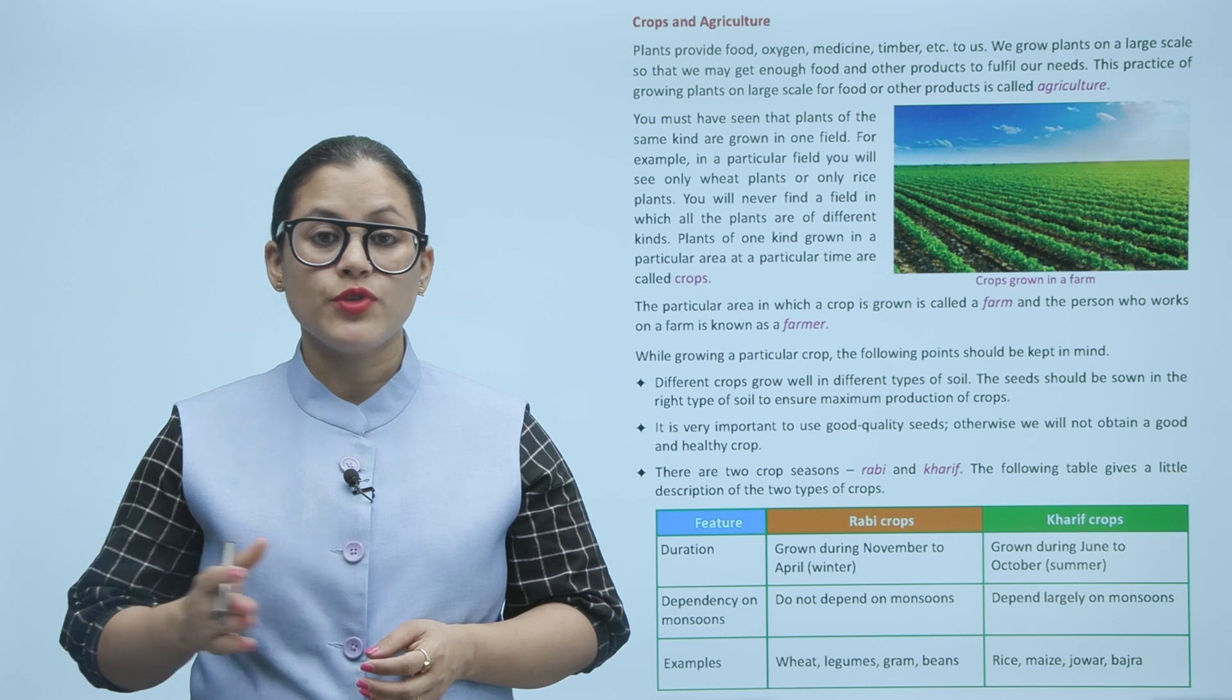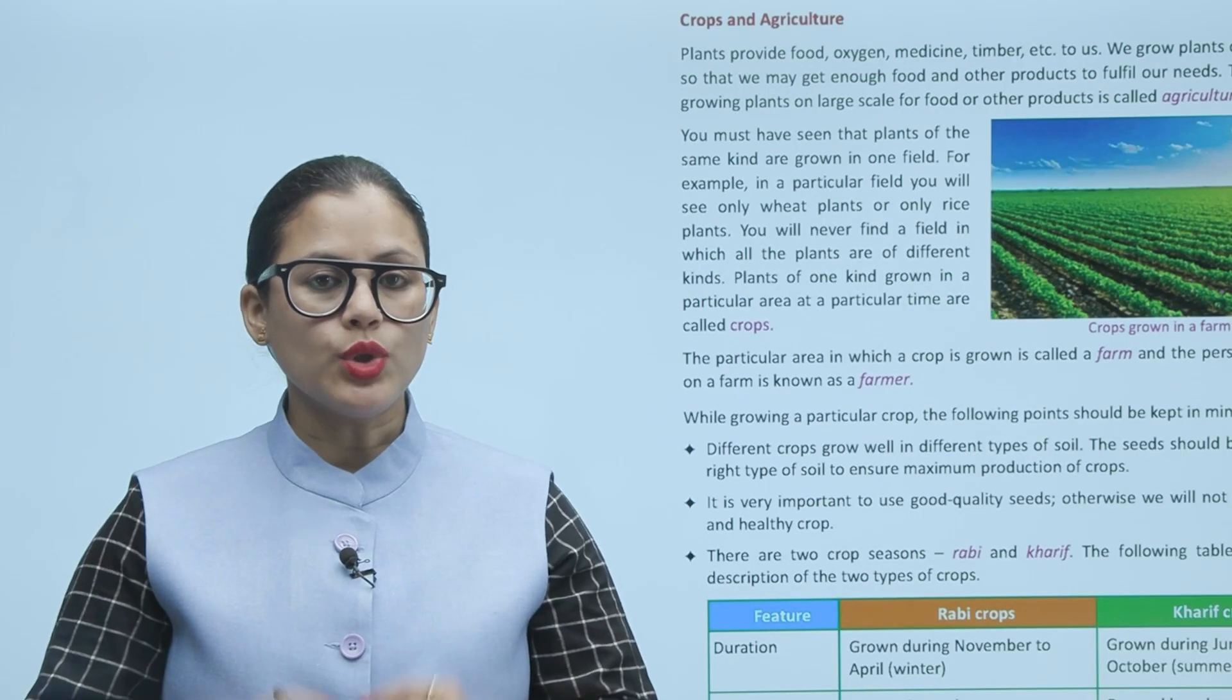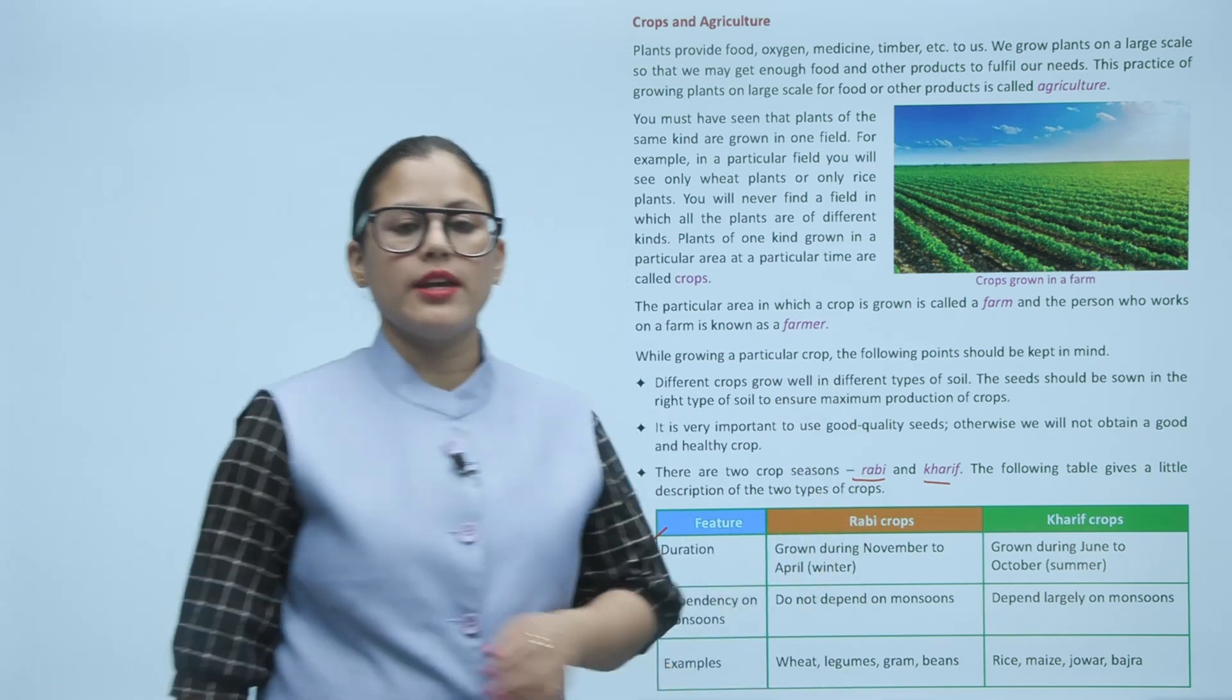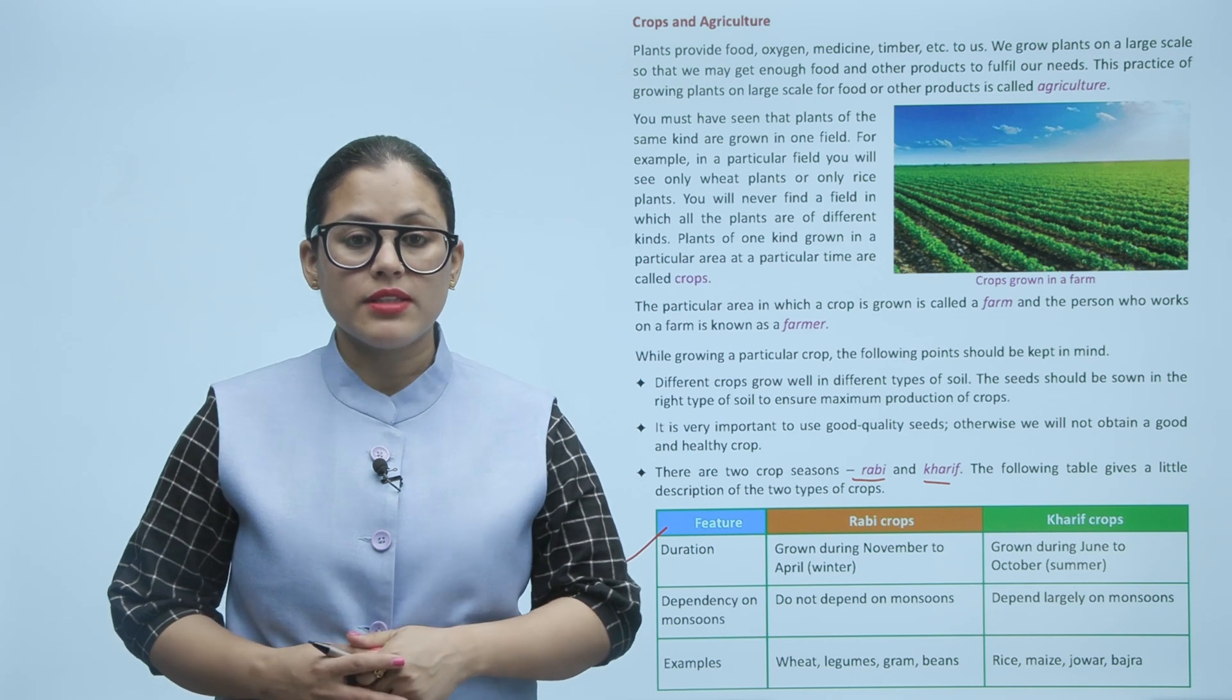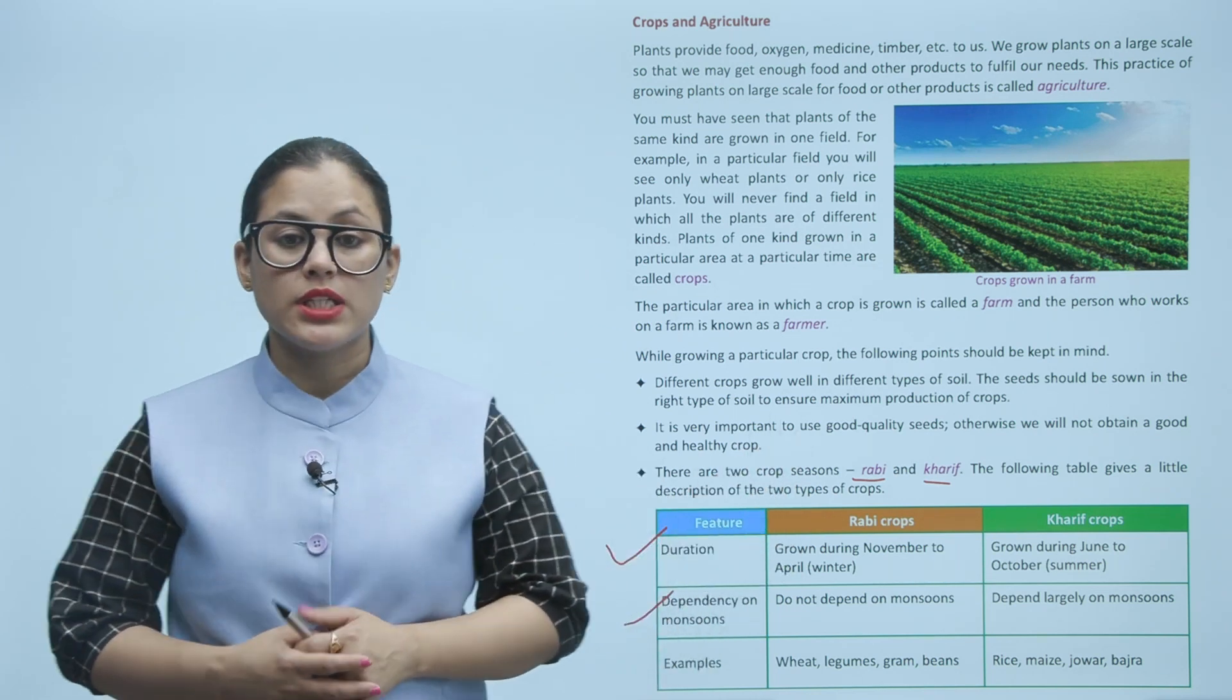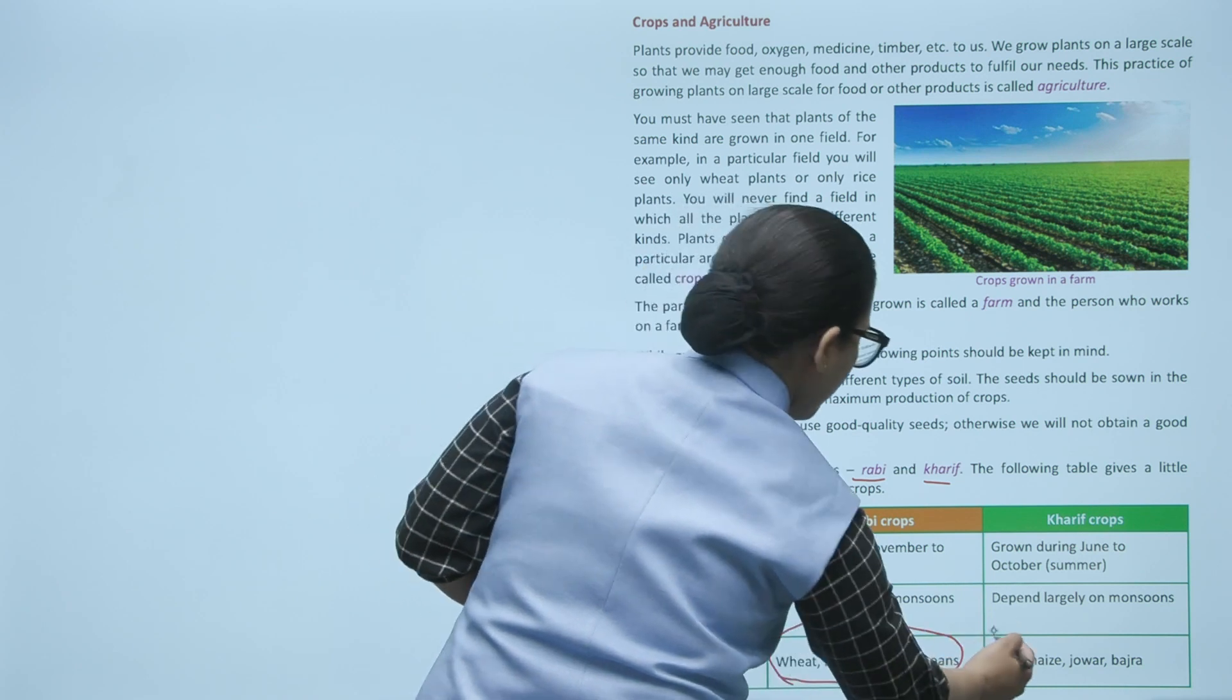There are two crop seasons: rabi and kharif. The following table gives a little description of the two types of crops. Rabi crop duration is November to April, that is winter. Kharif crops are from June to October, that is summer. Dependency on monsoons: rabi crop is not dependent on monsoon, while kharif crop is largely dependent on monsoon.